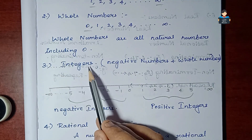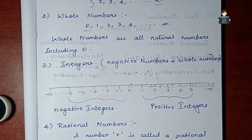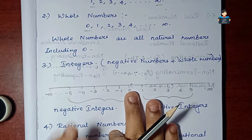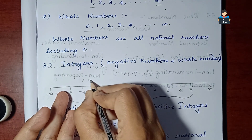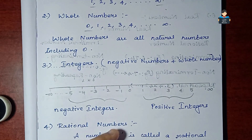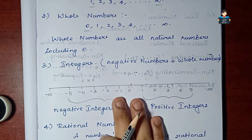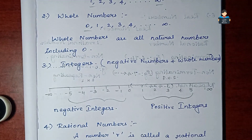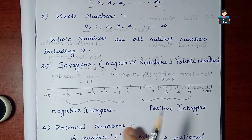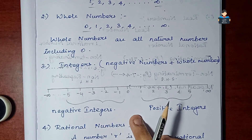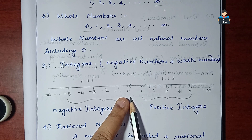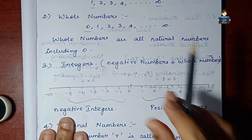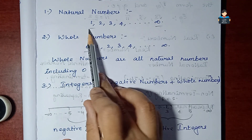Next, integers. We will look at the number line. On the left-hand side of zero are the negative integers, and on the right-hand side are the positive integers. Zero is neither negative nor positive. So integers are negative numbers plus all whole numbers.